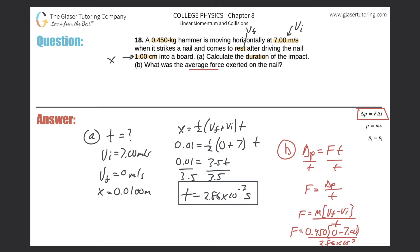I can now easily calculate the force by plugging this into the calculator. 0.45 times negative 7 divided by 2.86 times 10 to the minus 3. And we get negative 1.10 times 10 to the third newtons.